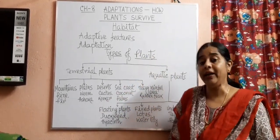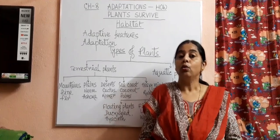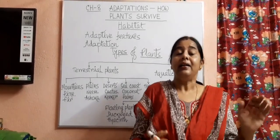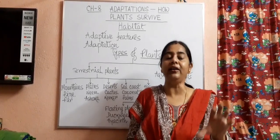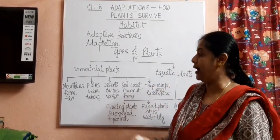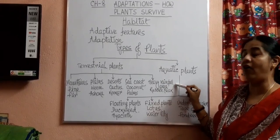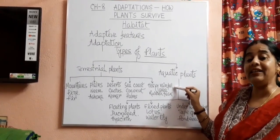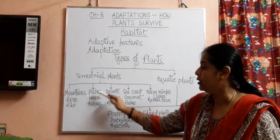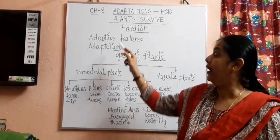Today, we are going to study about terrestrial plants. The plants which live on land are known as terrestrial plants. The land mass is divided into different types: mountains, plains, deserts, sea coasts, and areas with heavy rainfall. So, the land of the earth's surface is divided into these five categories, where plants survive with the help of their adaptive features.